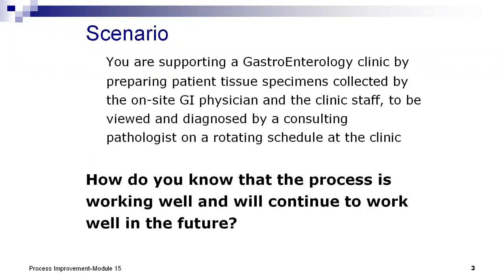The scenario we're going to be talking about is an anatomic pathology situation where you're supporting a GI clinic by preparing patient tissue specimens collected by the on-site gastrointestinal physician and clinic staff, to be viewed and diagnosed by a consulting pathologist who appears on a rotating schedule at this clinic. The key question is: how do you know that the process is working well and will it continue to work well into the future? This is an actual case study that just occurred in the past year of my consulting, and it was rather enlightening after all the years I've spent — what you find out when you do a little investigation.